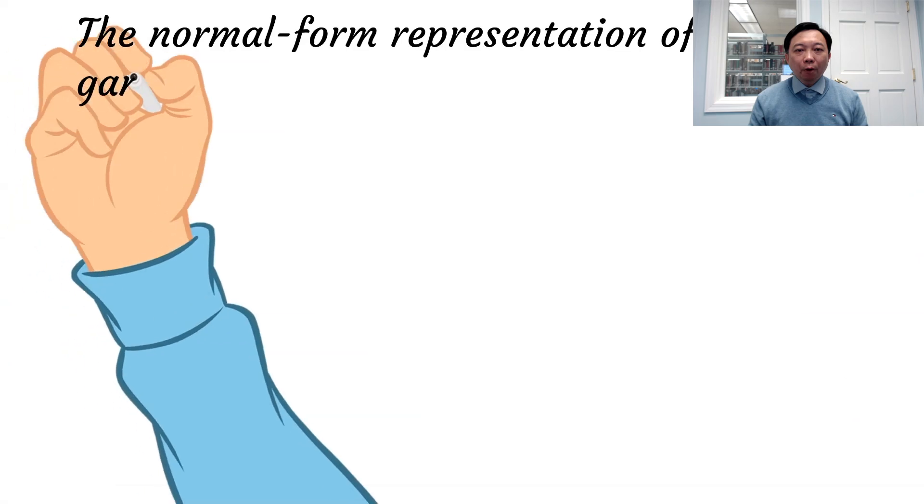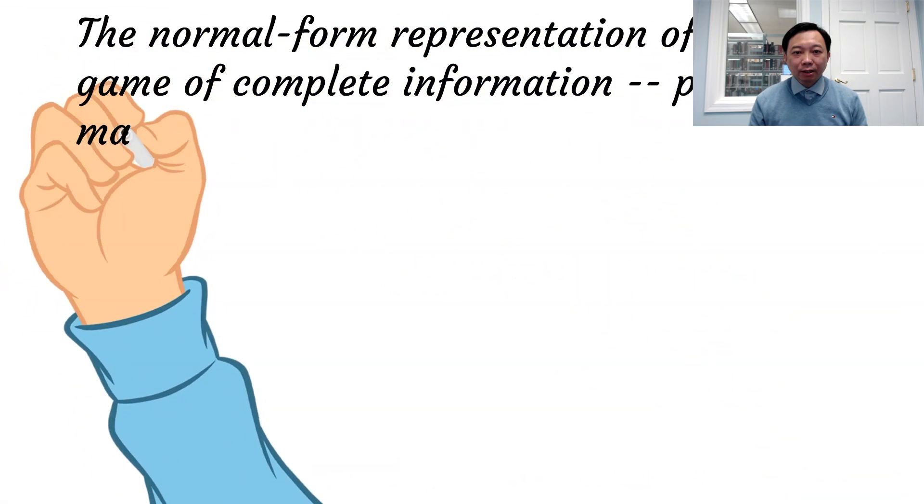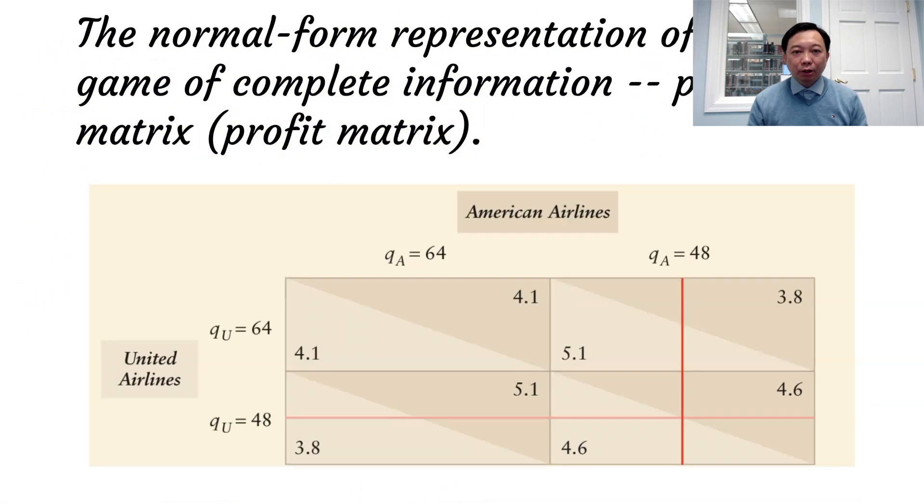The normal form representation of a static game is the payoff matrix. It specifies the players in the game, their possible strategies, and the payoffs for each combination of strategies.